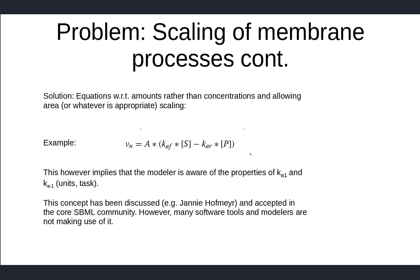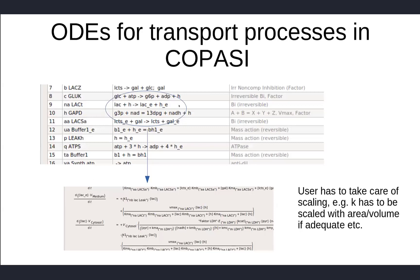That's also what happens in Copasi. You can tell the software to scale with the volume if appropriate, or differently. You can define that your rate constant is a global quantity and then define how that should scale with any volume increase—if it scales with the resulting area, if it scales not at all, whatever. But you have to be aware that you have to do that actively.